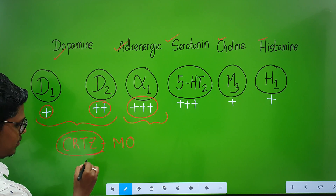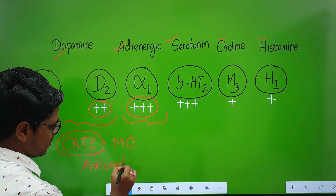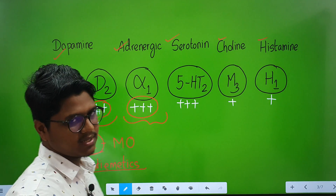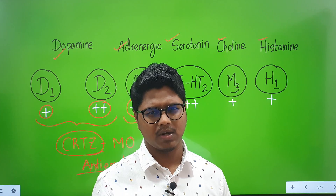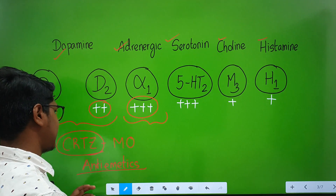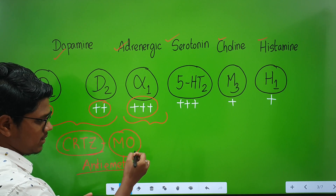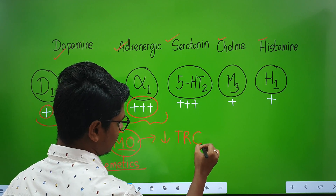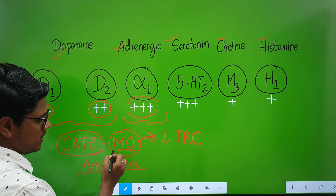They bind to dopamine receptors in the chemoreceptor trigger zone (CRTZ) of the medulla oblongata, producing an anti-emetic effect. They are very good anti-emetics — if conventional anti-emetics like ondansetron or metoclopramide are not working in patients with severe vomiting, you can try phenothiazines. They also bind dopamine receptors in the medulla oblongata, reducing thermoregulatory control — thermoregulation will be lost.